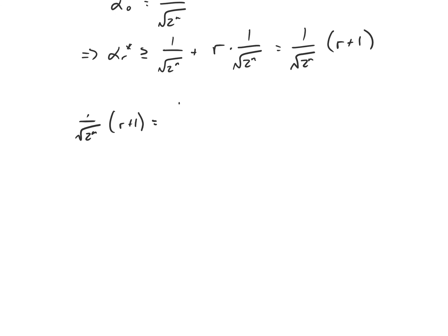Setting 1 over root(2^n) times (r + 1) equal to 1 over root 2, we see this holds when r equals root(2^n) minus 1 minus 1. This is the number of applications required if alpha star increased by the minimum amount each time. But we know at the beginning alpha star increases faster than the minimum, so this is really an upper bound on how many times we have to apply the subroutine. The conclusion is that f, the number of subroutine applications needed to get alpha star equal to 1/√2, is at most root(2^(n-1)) minus 1.